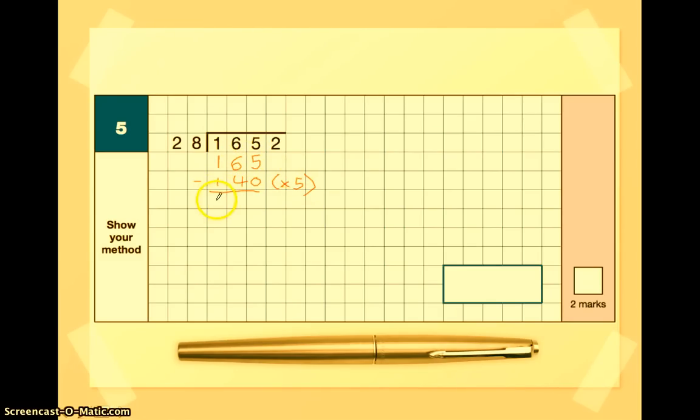100 subtract 100 is going to give us 0. 6 subtract 4 is going to give us 2 in the tens. And 5 subtract 0 is going to give us 5 in the units. Now, can we divide 28 into 25? As it's a smaller number, the answer is no. 5 goes above the 5 here, because that's the last number we drew down.